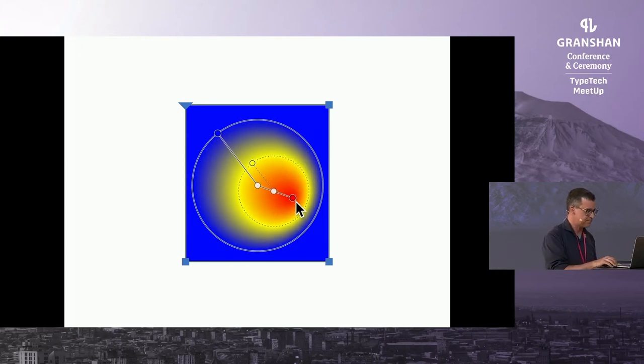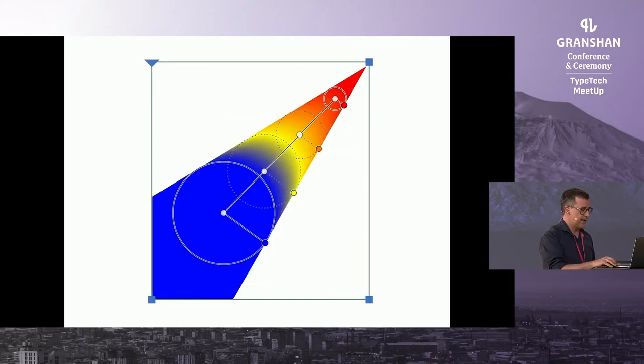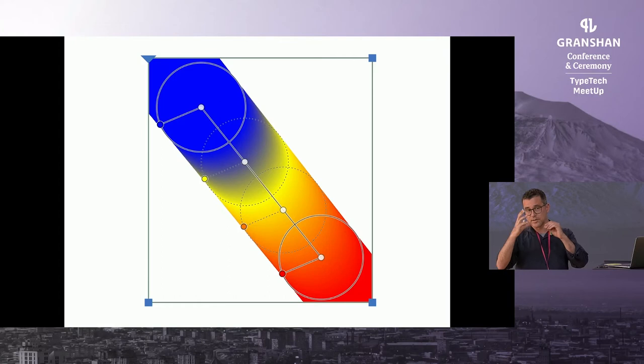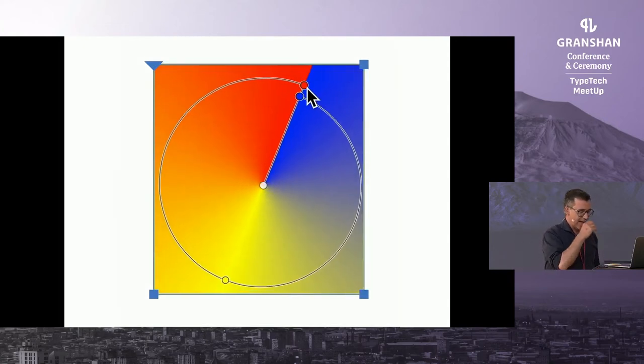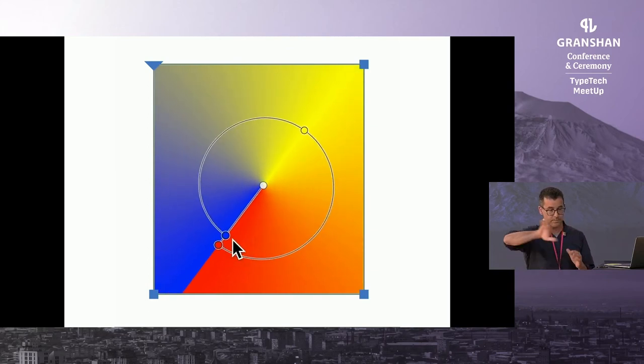Concentric circles don't need to be concentric, they can be along a line. And if you move them apart from each other, then it turns into a cone. Of course, you can change the size of these circles, and if you make them more or less the same size, then you get like a cylindric thing.